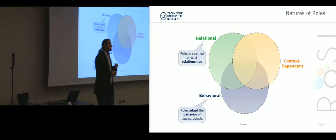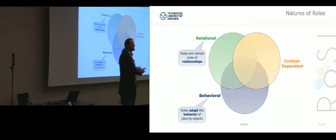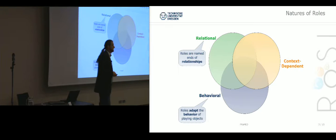The relational nature states that roles are usually modeled as name places at the end of relationships. We all know them since ER in '76 and UML later on. What this actually means is that when I play the role of the speaker, I'm in a relationship to each of you. You're my audience; each of you plays the role of my audience.